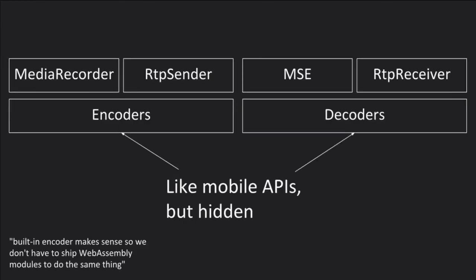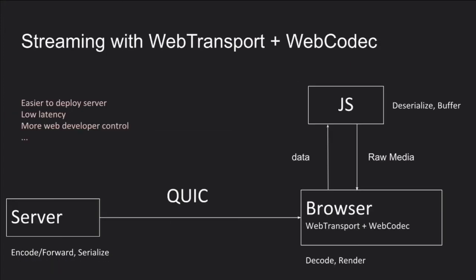We can also do better on the codecs side — basically by taking the codecs that are already below the existing web APIs. MSE and WebRTC have decoders below them, and on the encode side there's WebRTC and Media Recorder. We can just expose those directly to the web in a web-friendly, performance-friendly way.